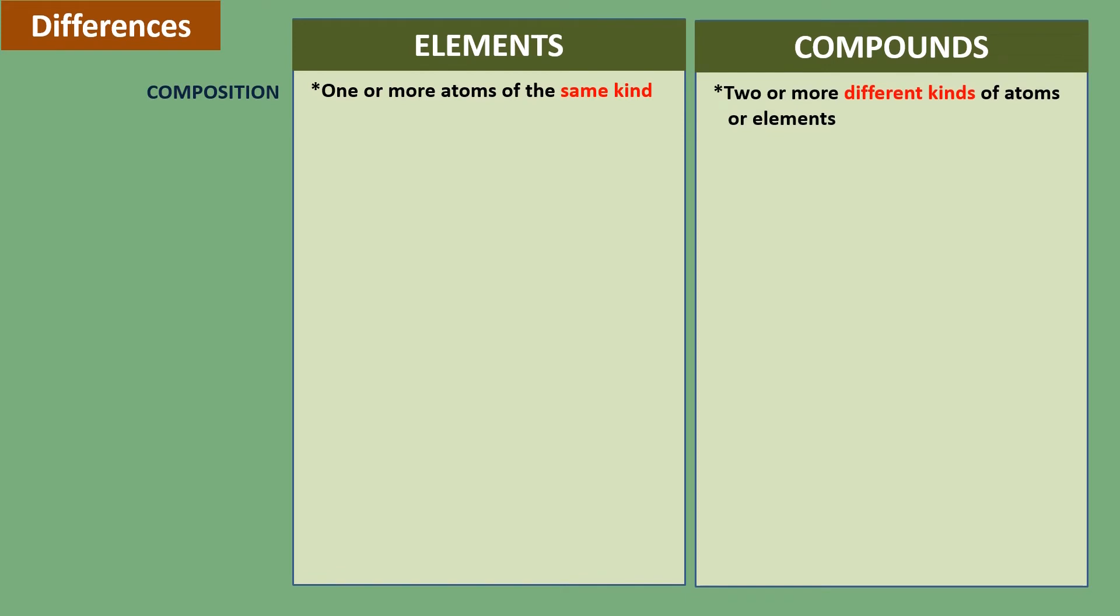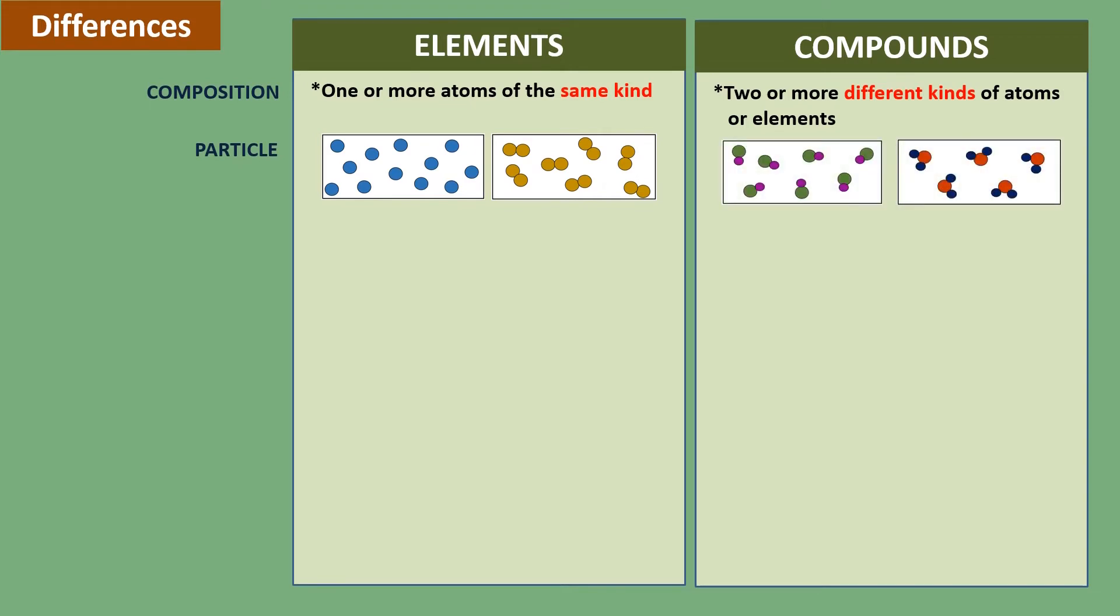Now let us move on to their particle. The particles of elements look like atoms that can be isolated or combined with the same atoms, while the particles of compounds combine two or more different types of elements.